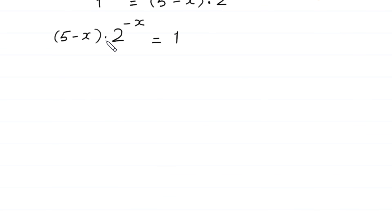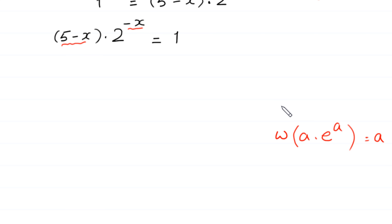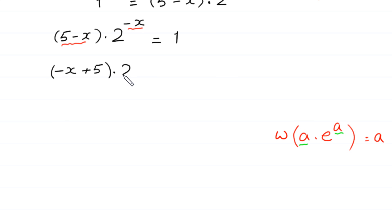Now we want to use the Lambert W function here. That is, the Lambert W function of a times e to the power a is equal to a. To use the Lambert W function, we must have the same expression in both places. For now, here we have negative x and here we have 5 minus x. So let's make negative x match 5 minus x by writing 5 minus x as negative x plus 5. So negative x plus 5 times 2 to the power negative x is equal to 1.